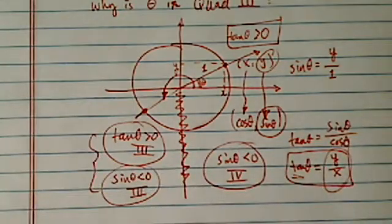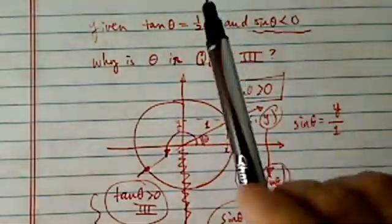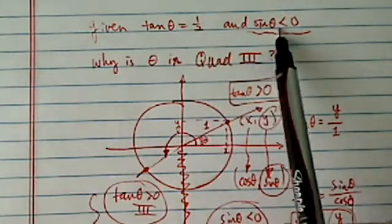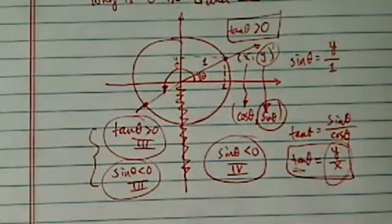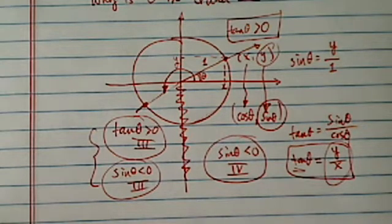Combination of those two clues, that's how we determine theta is in quadrant three, given the two clues: tangent theta equal to half, and sine theta is less than zero. So that's how we handle how to find theta in which quadrant. We need the two clues. Hope it's clear. Please comment on YouTube.